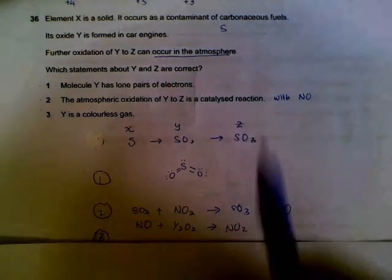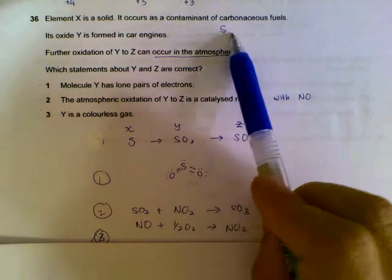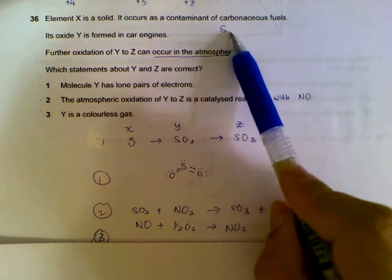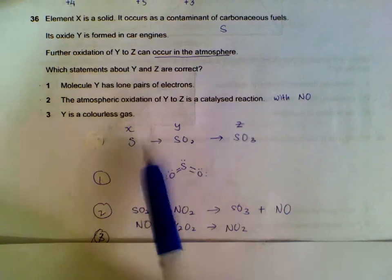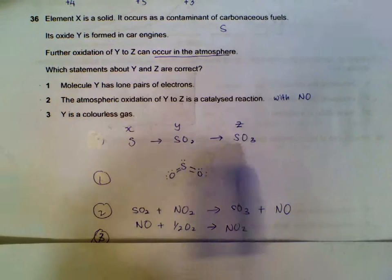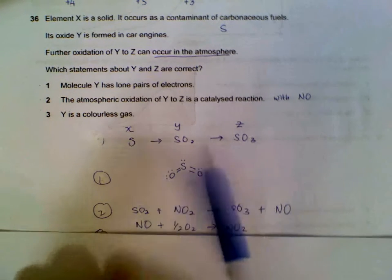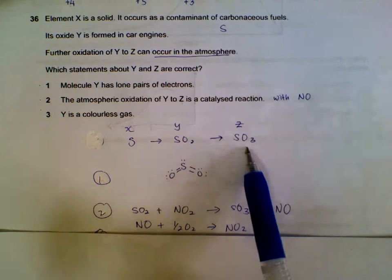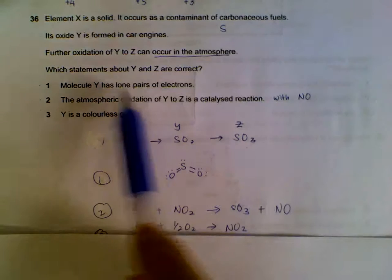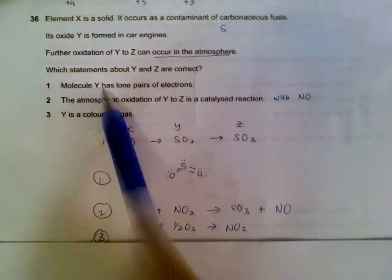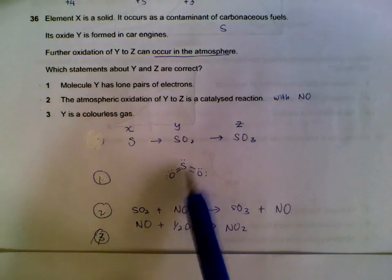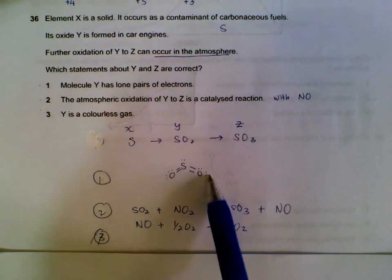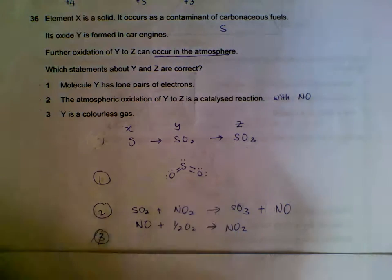Number 36. Element X is a solid contaminant of carbon containing fuels, so it's referring to sulfur. Its oxide is formed in car engines and then can be further oxidized. This is the way sulfur becomes sulfur dioxide and then becomes sulfur trioxide. So X, Y and Z. First statement: Molecule Y has lone pairs. This is sulfur dioxide, it has lone pairs, not just on sulfur, but also on the oxygen atoms. So one is correct.